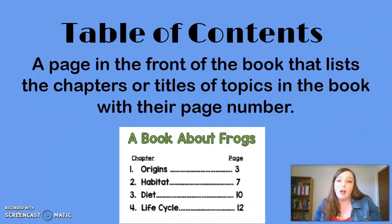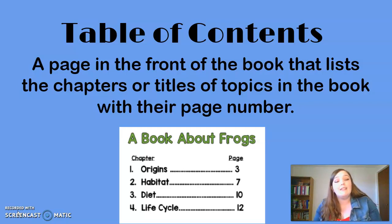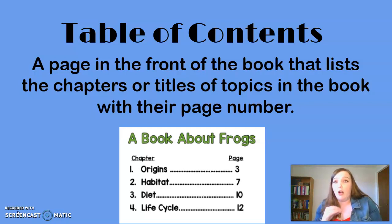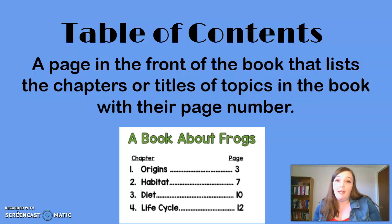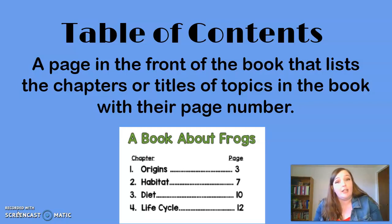The first feature I want to talk to you about is a table of contents. A table of contents is a page in the front of a book that lists the chapters or titles of topics in the book with their page numbers. It's great because it helps you figure out where all the information in the story is. For example, all of the examples I'm giving you today come from a nonfiction story about frogs. So if I wanted to learn about what a frog might eat, I would go to the diet chapter and start reading on page 10.